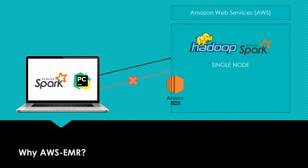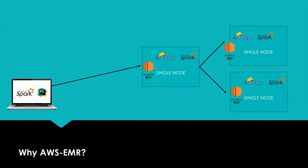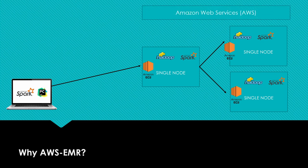Coming back to our big data project, EC2 sounds good but doesn't fully serve our purpose because we are working with Apache Spark, which is a distributed computing platform. What EC2 gives us is a single-node machine — even though it is Elastic and we can expand resources, it is still a single node. What if we could deploy our code onto something like a master-slave architecture with a master node managing multiple worker nodes that can work in parallel, leveraging the full power of Apache Spark for processing huge data?